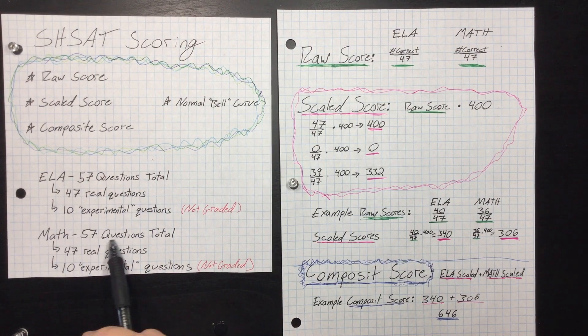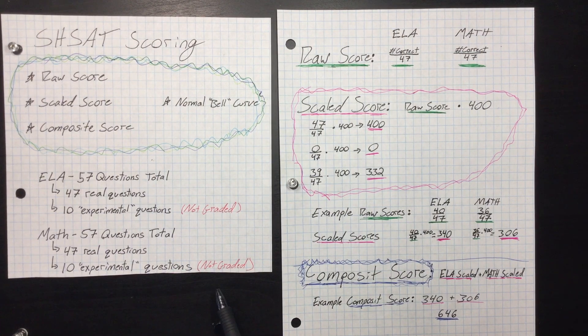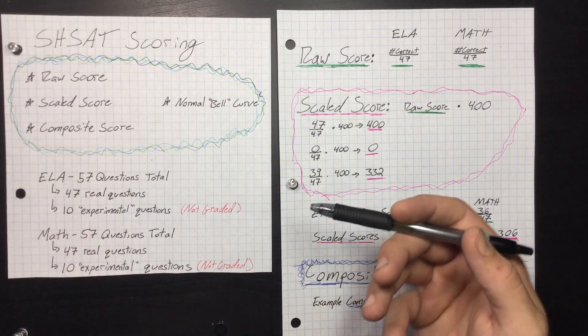Same thing with math. There's 57 questions total, 47 of them are real questions that matter and go towards your grade, 10 are experimental which just kind of give the city more information about what kids know and don't know.